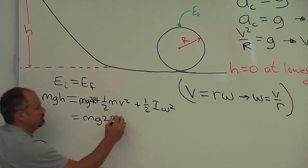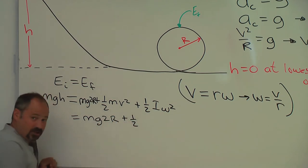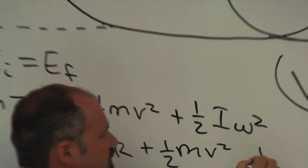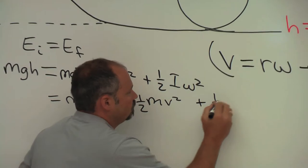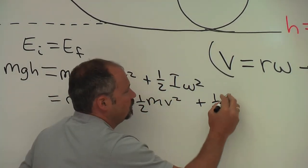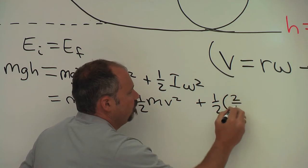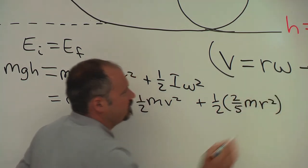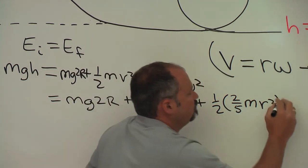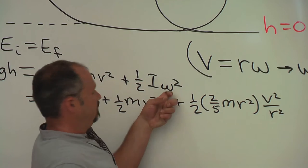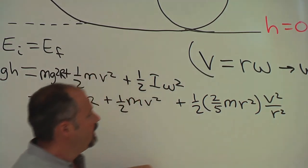And now I can plug this in here. mg(2R) plus the translational kinetic energy ½mv², plus the rotational kinetic energy, which is ½ times the moment of inertia of the ball, which is ⅖mr², multiplied by its speed over radius, v/r, squared, since the angular speed is squared here.